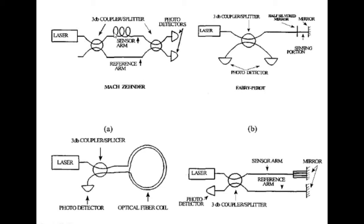You can apply stress, strain, pressure, or temperature — any environmental condition, any physical quantity — on the sensing arm. At that time, the output light intensity will vary and it goes to the connected photo diode. The photo diode sends both the reference signal and the measuring signal. This is the same concept as an intrinsic sensor — intrinsic is also the same, except here you apply it externally.